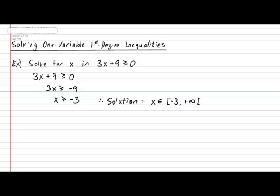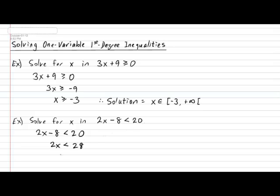Why don't you try one on your own? Suppose, for your next example, I gave you the following: Solve for x in the inequality 2x subtract 8 has to be smaller than 20. Go ahead, pause the video and try it now. Alright, let's see how you guys did. So, we have the expression 2x subtract 8 has to be smaller than 20. Moving the 8 over to the other side of the unequal sign, we have 2x smaller than 28. And then, dividing both sides by 2, we get that x has to be smaller than 14.